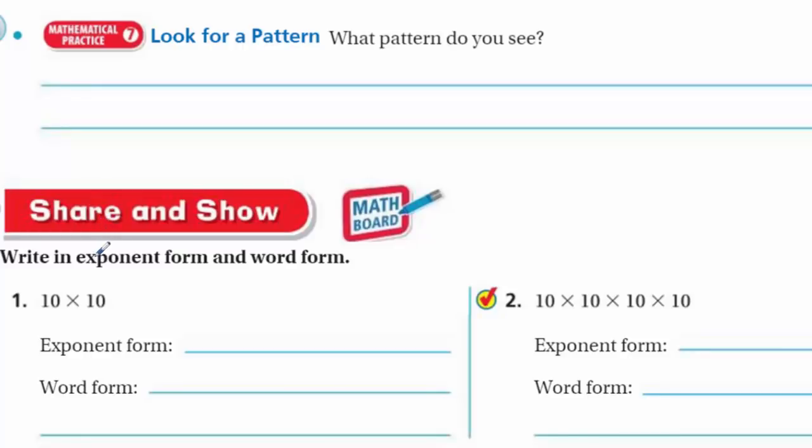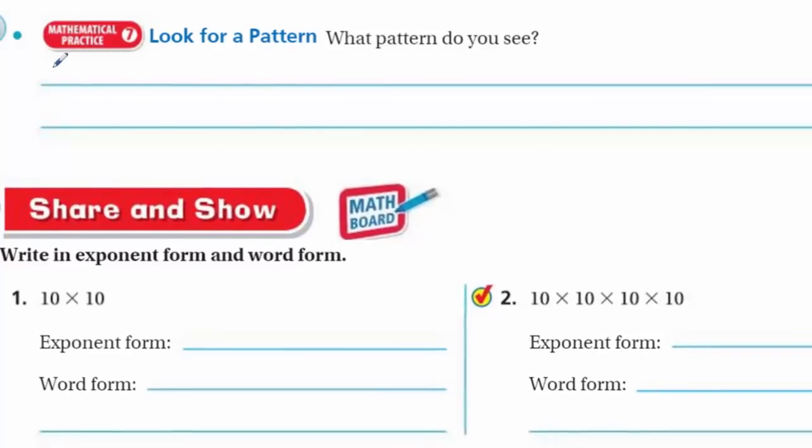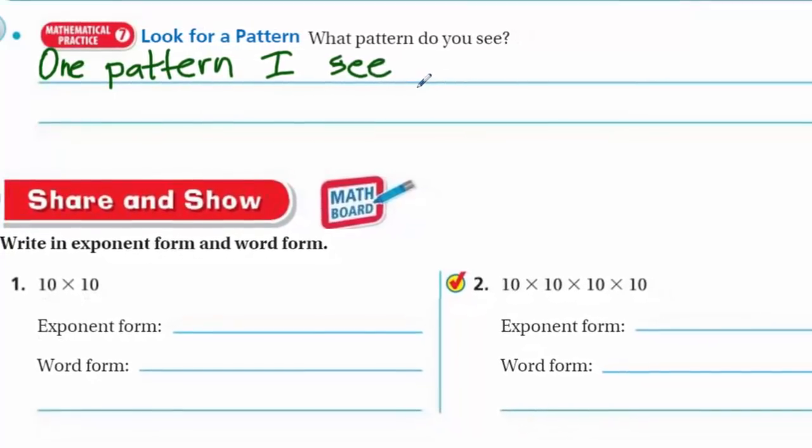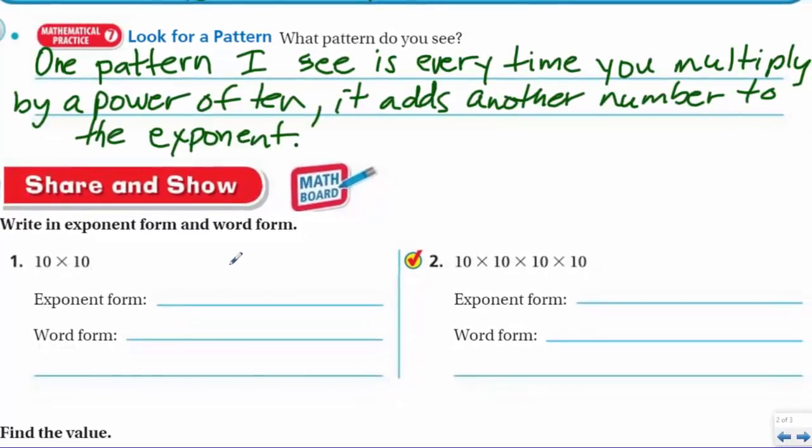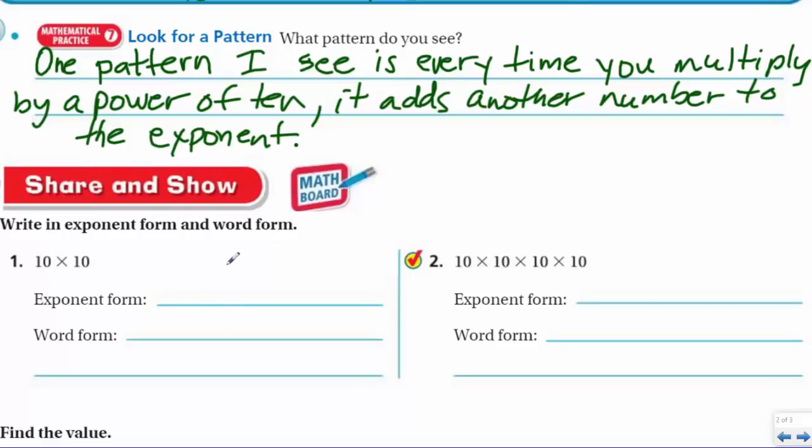Mathematical practice 7, look for a pattern. What pattern do you see? And I'm assuming that they're referring to the problem up above, the pattern. There's different things you could write. You could write one pattern, one pattern I see is every time you multiply by a power of 10, it increases the exponent by 1. I mean, that's one pattern, definitely. The same thing too, you know, if you look at the zeros, I'm not going to write this down, but the three zeros up here, that's what I mean, it matches your exponent. So if you have 3,000, that's 10 raised to the third power. That makes it pretty easy to see.